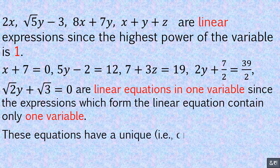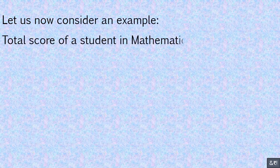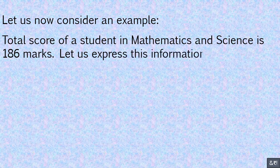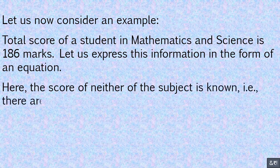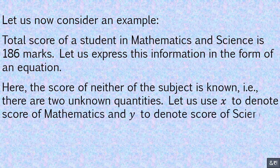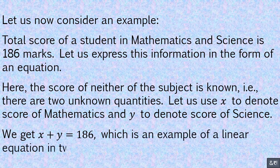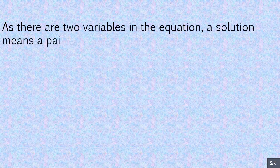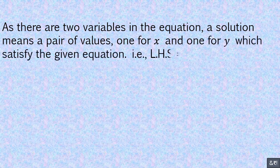Equations such as x plus 7 equals 0, 5y minus 2 equals 12, 7 plus 3z equals 19, 2y plus 7/2 equals 39/2, and root 2y plus root 3 equals 0 are linear equations in one variable, since the expressions which form the linear equation contain only one variable. These equations have a unique — that is, one and only one — solution, which we can represent on a number line. Let us now consider an example: the total score of a student in mathematics and science is 186 marks. Let us express this information in the form of an equation. Here the score of neither subject is known, that is, there are two unknown quantities. LHS equals RHS.